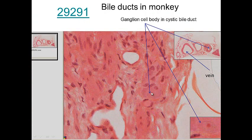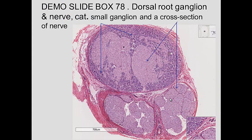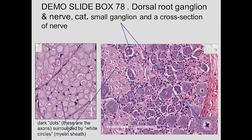Here we see multiple ganglion cells — one here, another one, another one right there. You can see the nucleoli very clearly in these. So in the various tissues you get signals coming in and you have neuron cell bodies — ganglia — that are located in the tissues themselves. Here we see the dorsal root ganglia. We see some nerves coming down through here. There are neural cell bodies of the ganglia in the dorsal root, and then these are actually nerves going through.